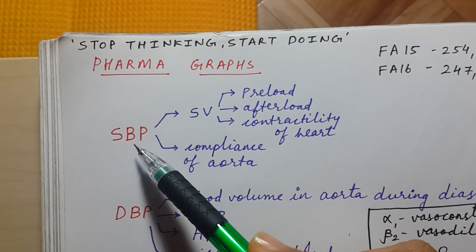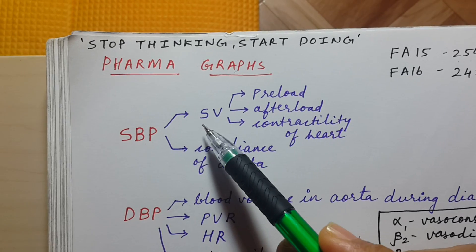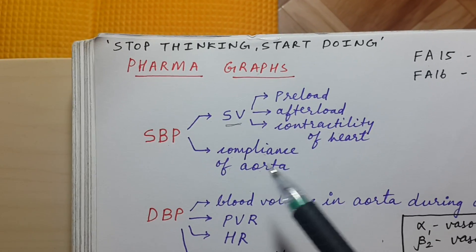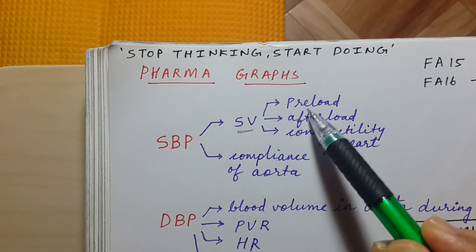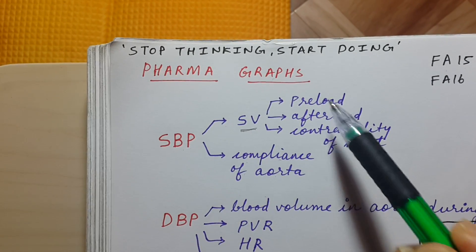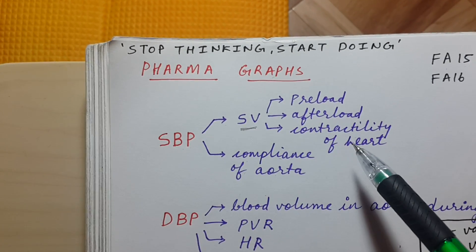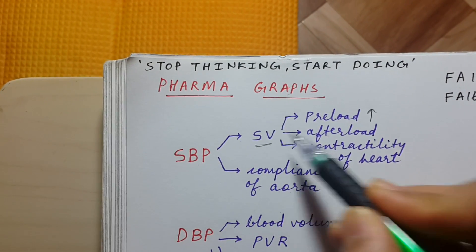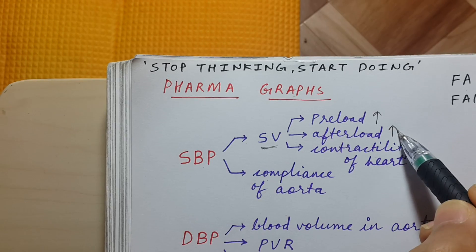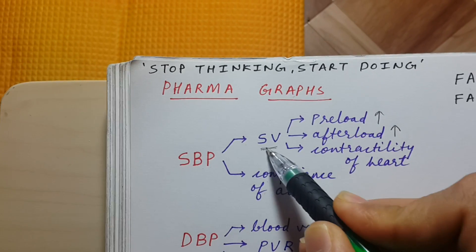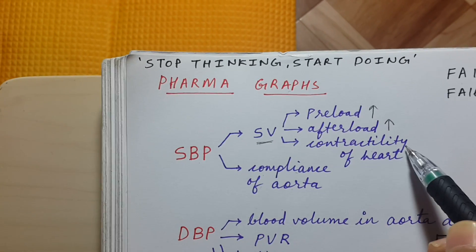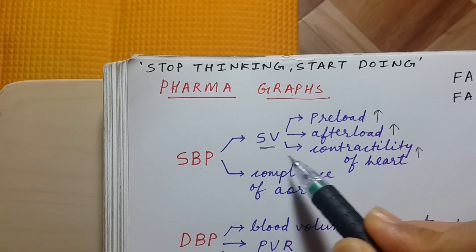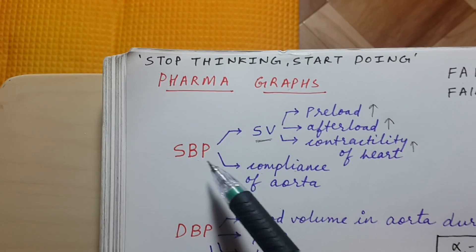Systolic blood pressure is mainly dependent on stroke volume and compliance of the aorta. Stroke volume depends on preload, afterload, and contractility of the heart. If preload increases, stroke volume increases. If afterload increases, stroke volume decreases. If contractility of the heart increases, stroke volume increases.